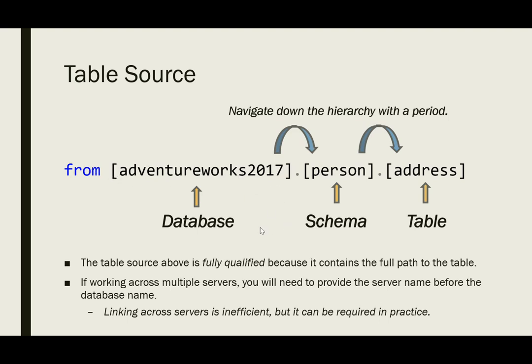The reference with the database, schema, and table all explicitly included in the table source is fully qualified because it contains the full path to the table. Technically it doesn't contain the server name, which is only required when working across multiple servers. Querying across servers is pretty inefficient, but I have encountered it in practice. Going forward, we're not really going to include the server name in the context of a table source.